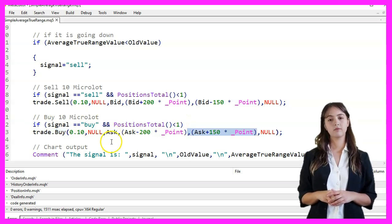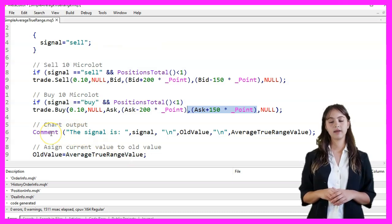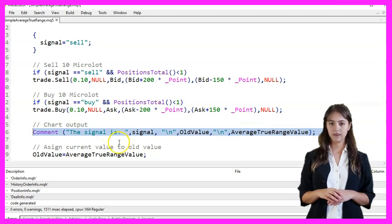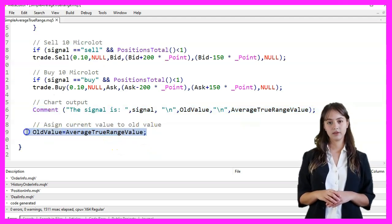We output the signal, the previous ATR value, and the current ATR value to the chart using the comment function. Finally, we update OldValue with the current ATR value.